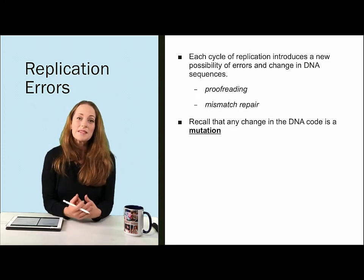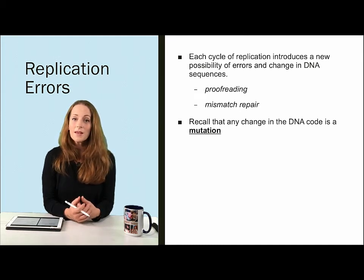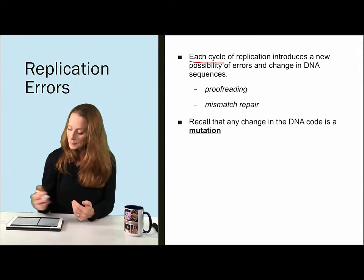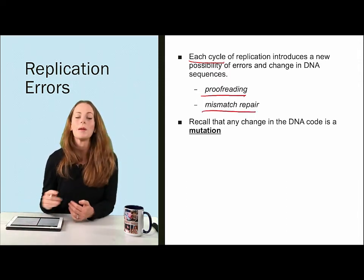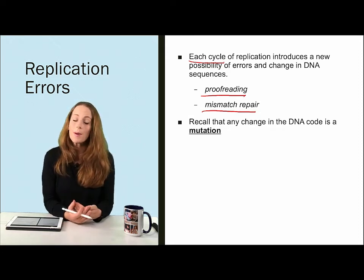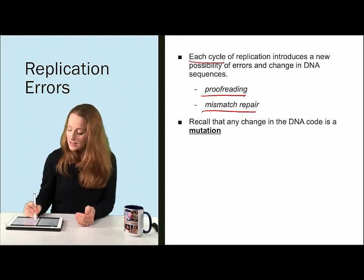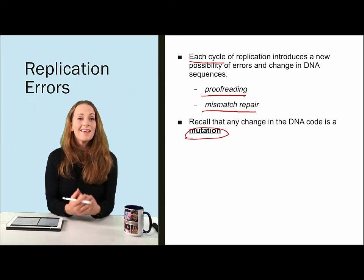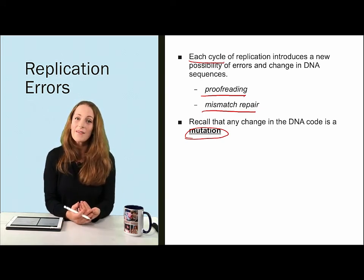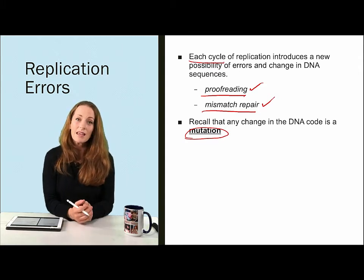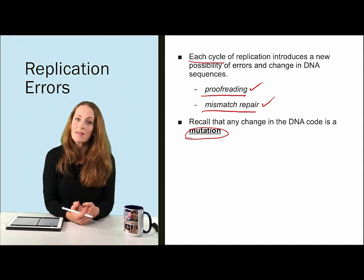Every cycle of replication introduces a new possibility of errors in the DNA. Proofreading and mismatch repair is done by various enzymes and molecules within the cell to prevent those errors from moving forward. Remember that any error or change in the DNA is a mutation. Some mutations are silent, totally benign, while other mutations can have huge impacts on the cell. So the process of proofreading and repair of the DNA is very important, particularly in very active cells that are undergoing many cycles of cell division.